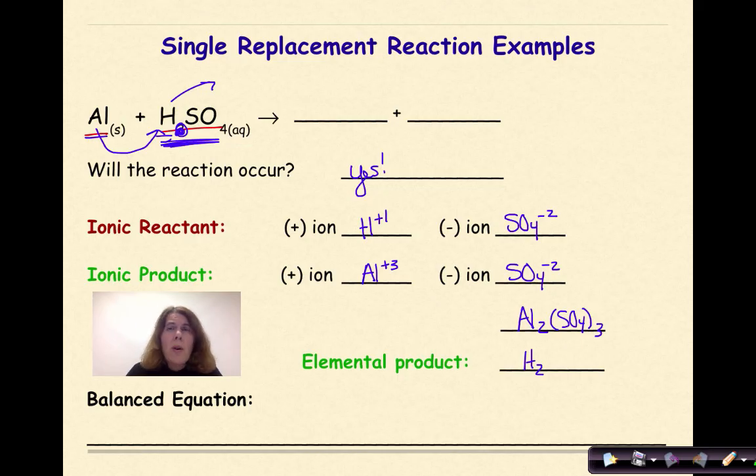So we're going to go back to our original reactants. AL plus H, bring back the two that I crossed out, that was silly. H2SO4 yields AL2 SO4 3 plus H2.